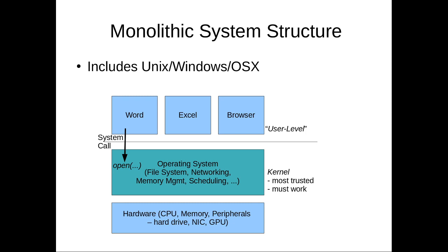In a monolithic system, all of the operating system services — file system, networking, memory management, scheduling, network device drivers, DMA ring buffers — all of that is in the kernel. The downside is that when something is in the kernel, we know that it has access to all of the resources on the system, so it must be trusted and must work properly.